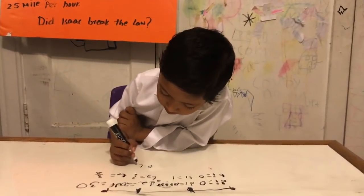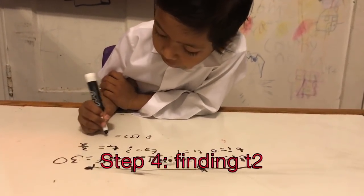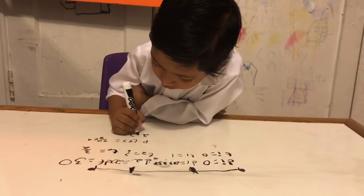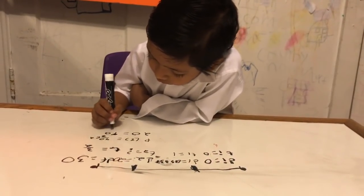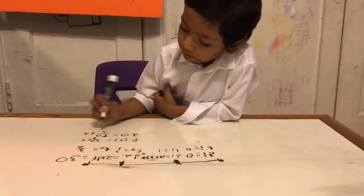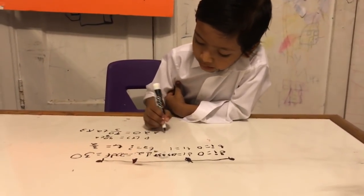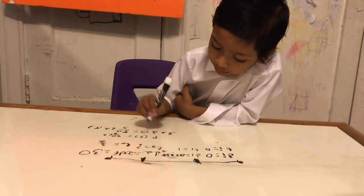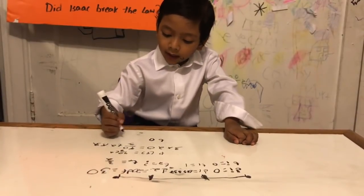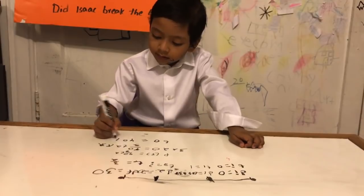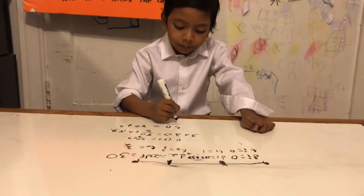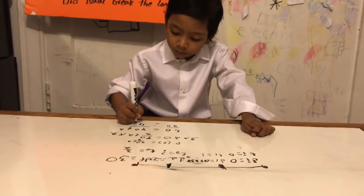P of T is equal to 40 over 3T squared. We replace P of T with 20, so 20 equals 40 over 3T squared. We multiply both sides by 3: 3 times 20 equals 60, so 60 equals 40T squared. Then we divide both sides by 40.